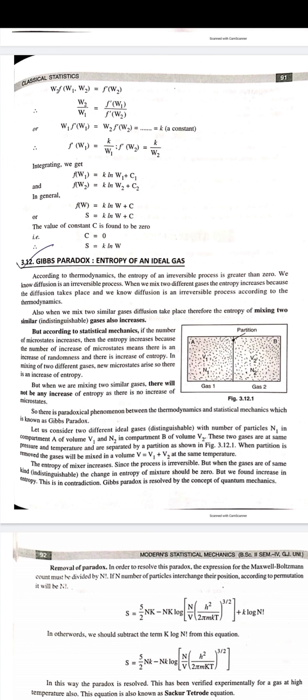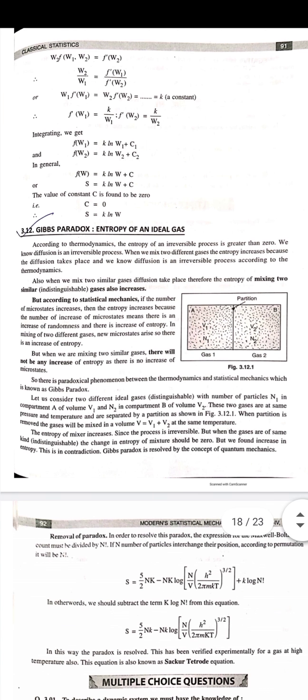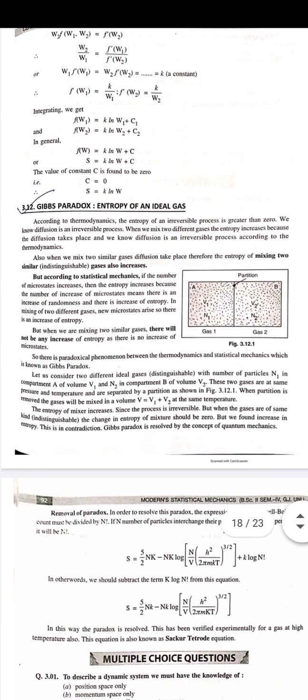F prime of W2 equals k by W2. Integrating F prime of W1, we get the integral of k by W1, which gives k ln W plus a constant of integration C2.